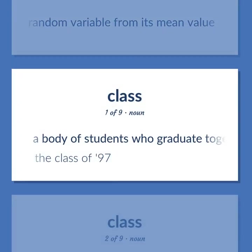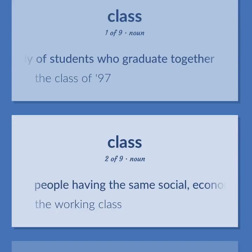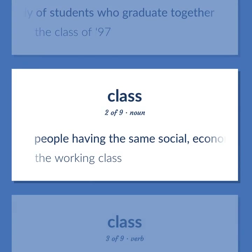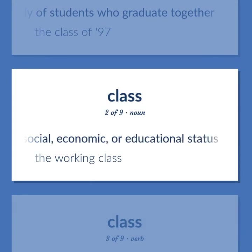Class: A body of students who graduate together — the class of '97. People having the same social, economic, or educational status — the working class.